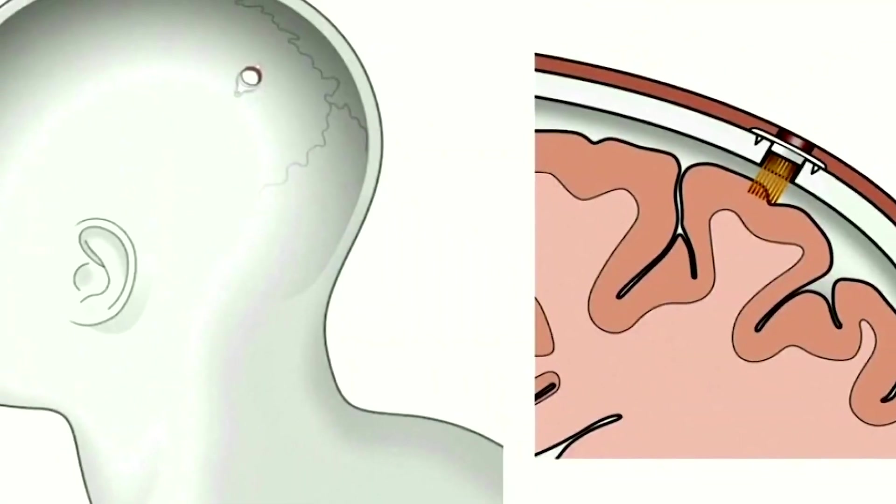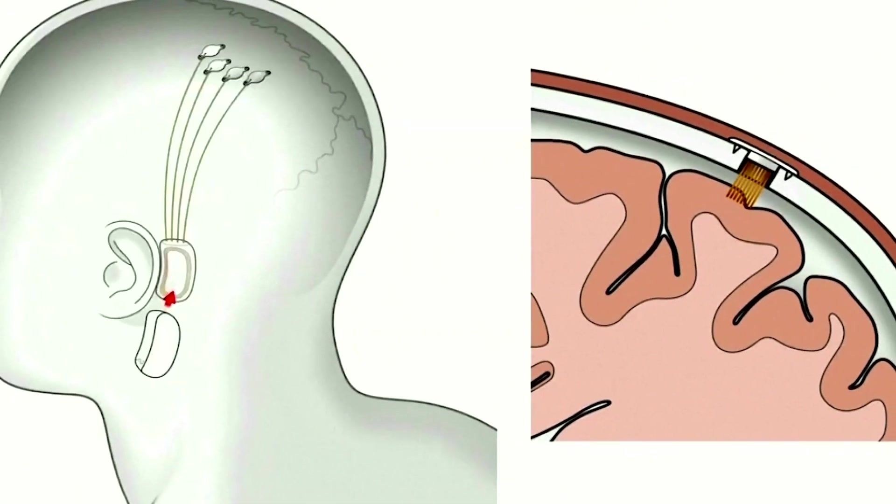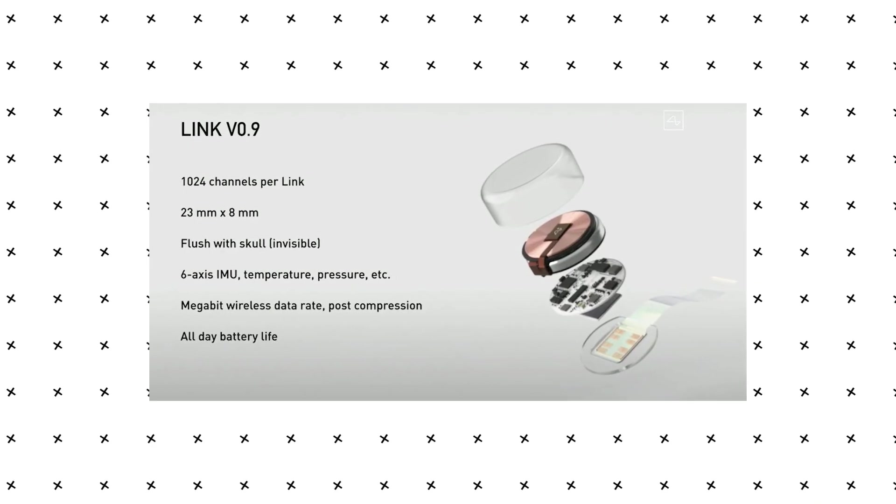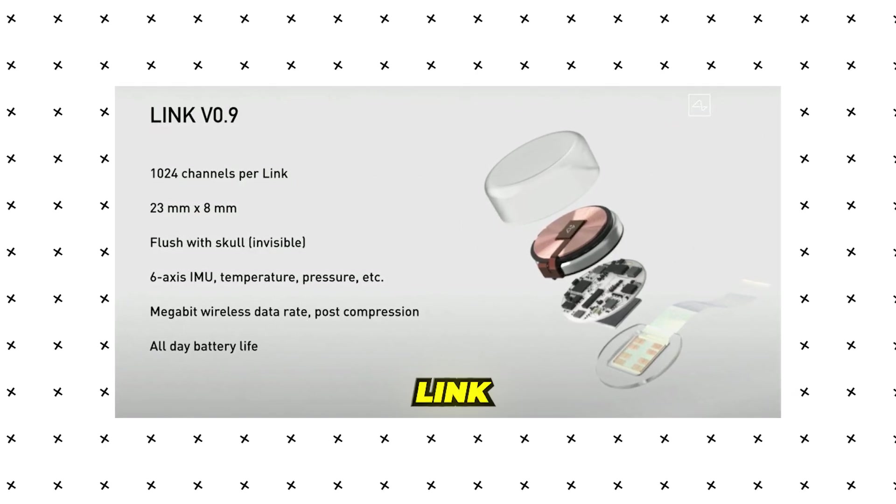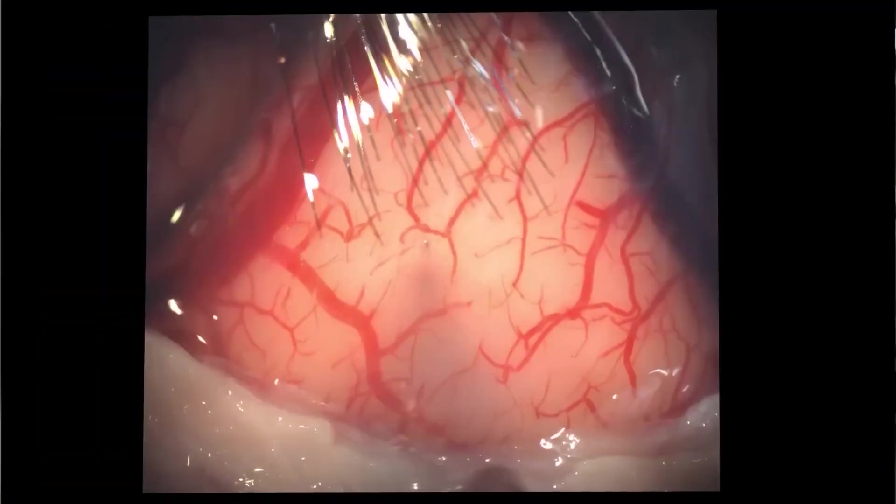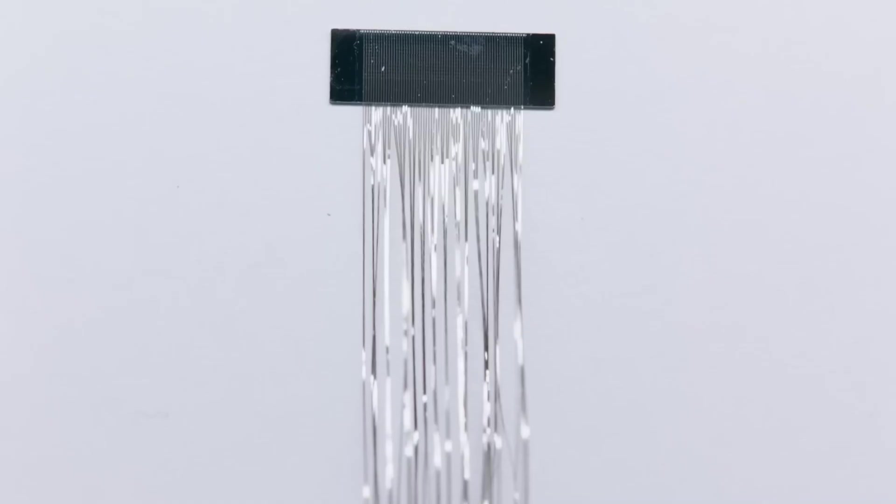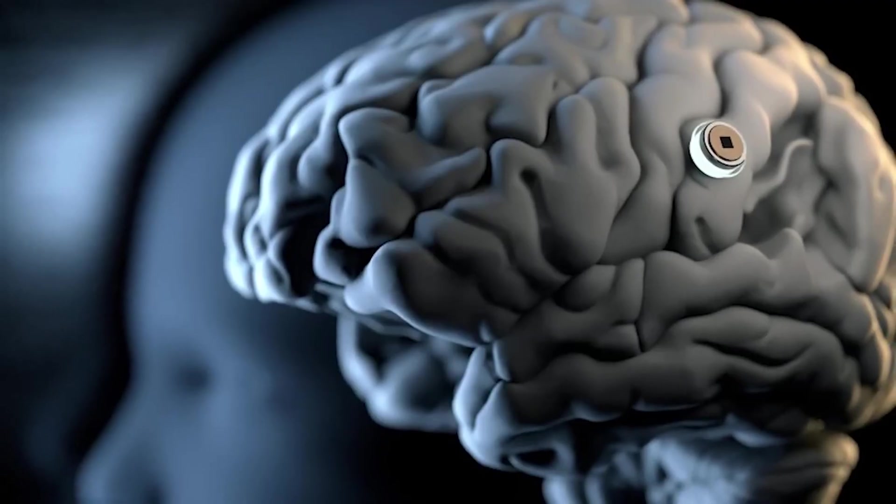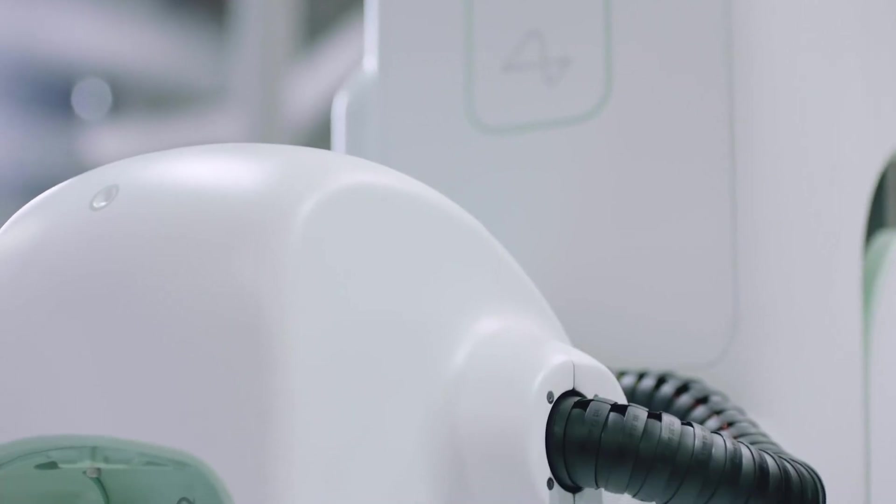The converted signals are then wirelessly transmitted to the Neuralink implant in the brain. This implant, known as the Link, is a remarkable piece of technology. About the size of a coin, it contains thousands of flexible electrode threads, each thinner than a human hair. These threads are precisely inserted into specific areas of the brain by Neuralink's custom-built surgical robot, ensuring minimal tissue damage.